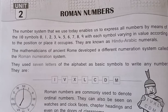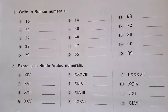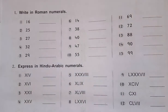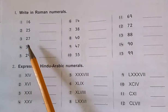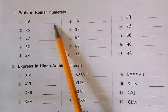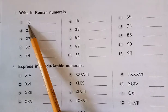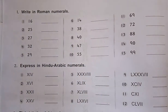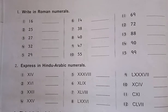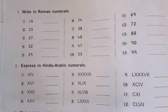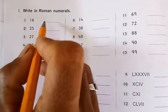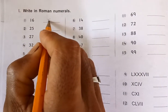This is from Unit 2, Roman Numbers, page number 22, question number 1: write in Roman numerals. Here many numbers are given in Hindu-Arabic numerals, and you have to write them in Roman numerals. To write in Roman numerals, there are two principles: one is the addition principle and the other is the subtraction principle.